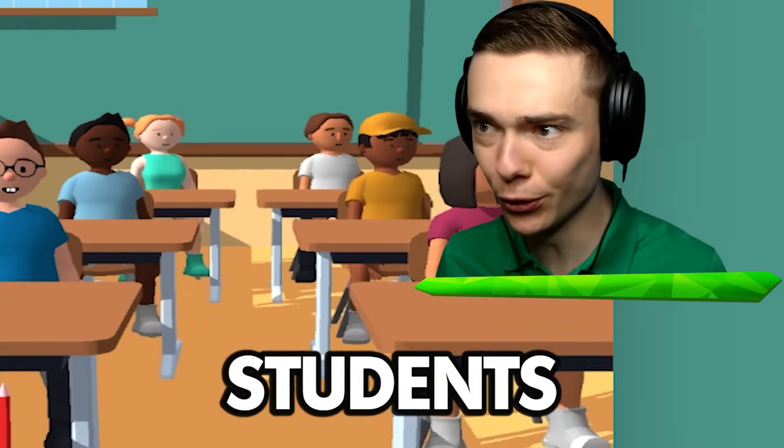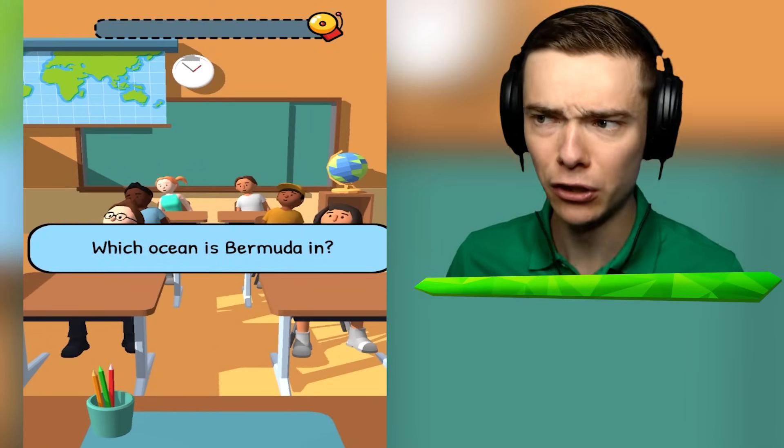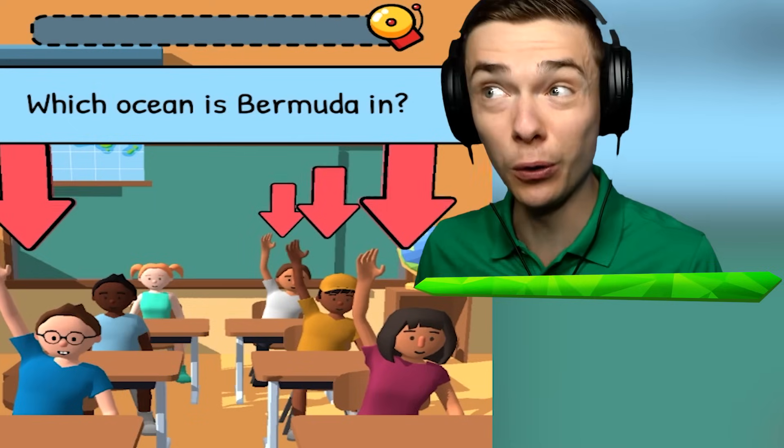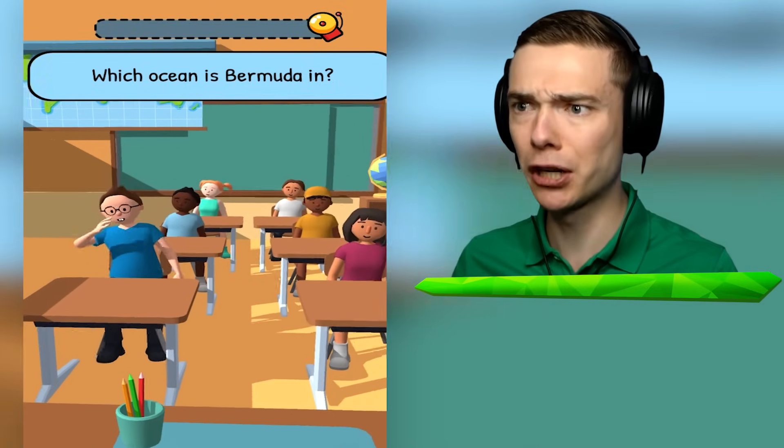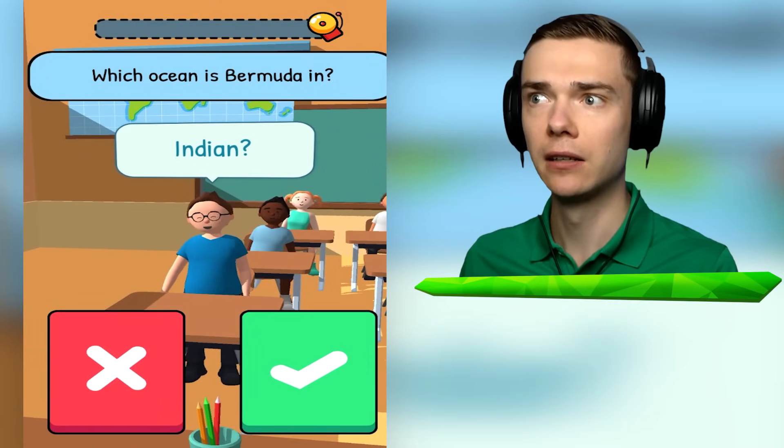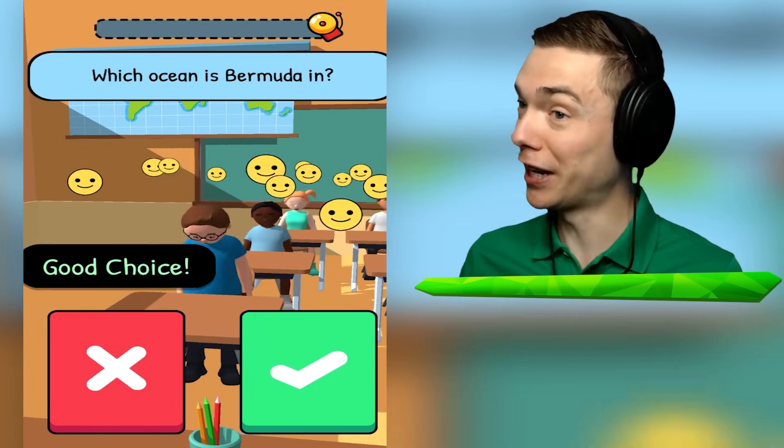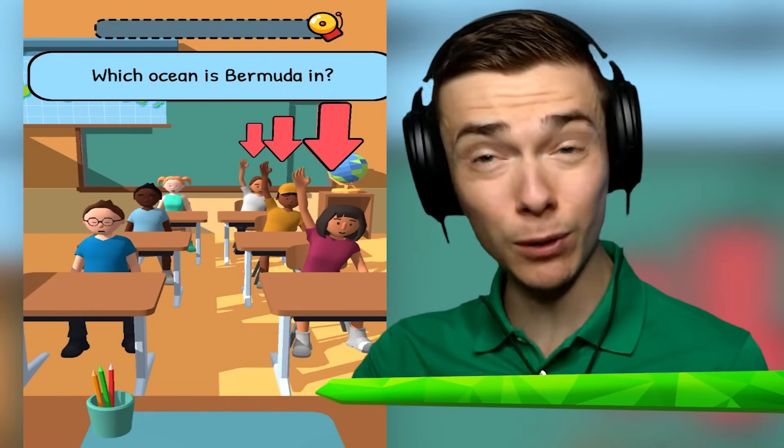I'm the teacher of the world's smartest students and we're going to ask them a question to see if they are actually smart. Which ocean is the Bermuda in? That triangle where all those people get missing? Right, Timmy, you are very smart, right? Indian Ocean? I don't think that's true, Timmy. Oh, what? I thought he was smart.